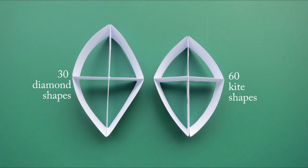Make 30 diamond shaped parts, diamonds, and 60 kite shaped parts, kites.